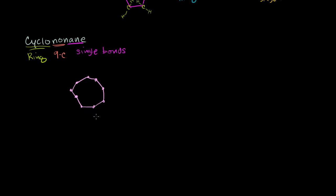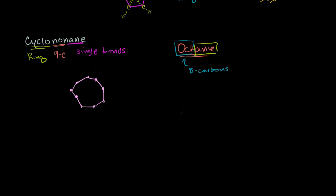So if someone were to tell you octane — and that word might feel familiar from the gas station — they are literally talking about the molecule octane. The 'oct' tells you that you have 8 carbons. There is no 'cyclo' in front of it, so it's not a ring — it's just going to be a chain. And then the '-ane' part tells you that they're all single bonds. So it's just going to be 8 carbons in a chain: 1, 2, 3, 4, 5, 6, 7, 8. In the next few videos, we'll add more to these molecules and make the names even more complex.